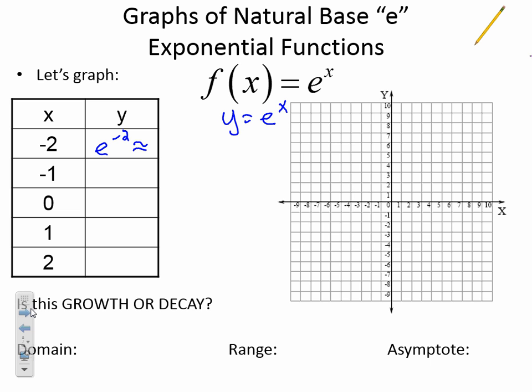Then I'd have E to the negative 1, which is approximately 0.37. Continue on. I'm going to have E to the 0 power, and anything to the 0 power is just 1. Then I'll have E to the first power, which is approximately 2.72. And now I'll have E to the second power, which is approximately 7.39.